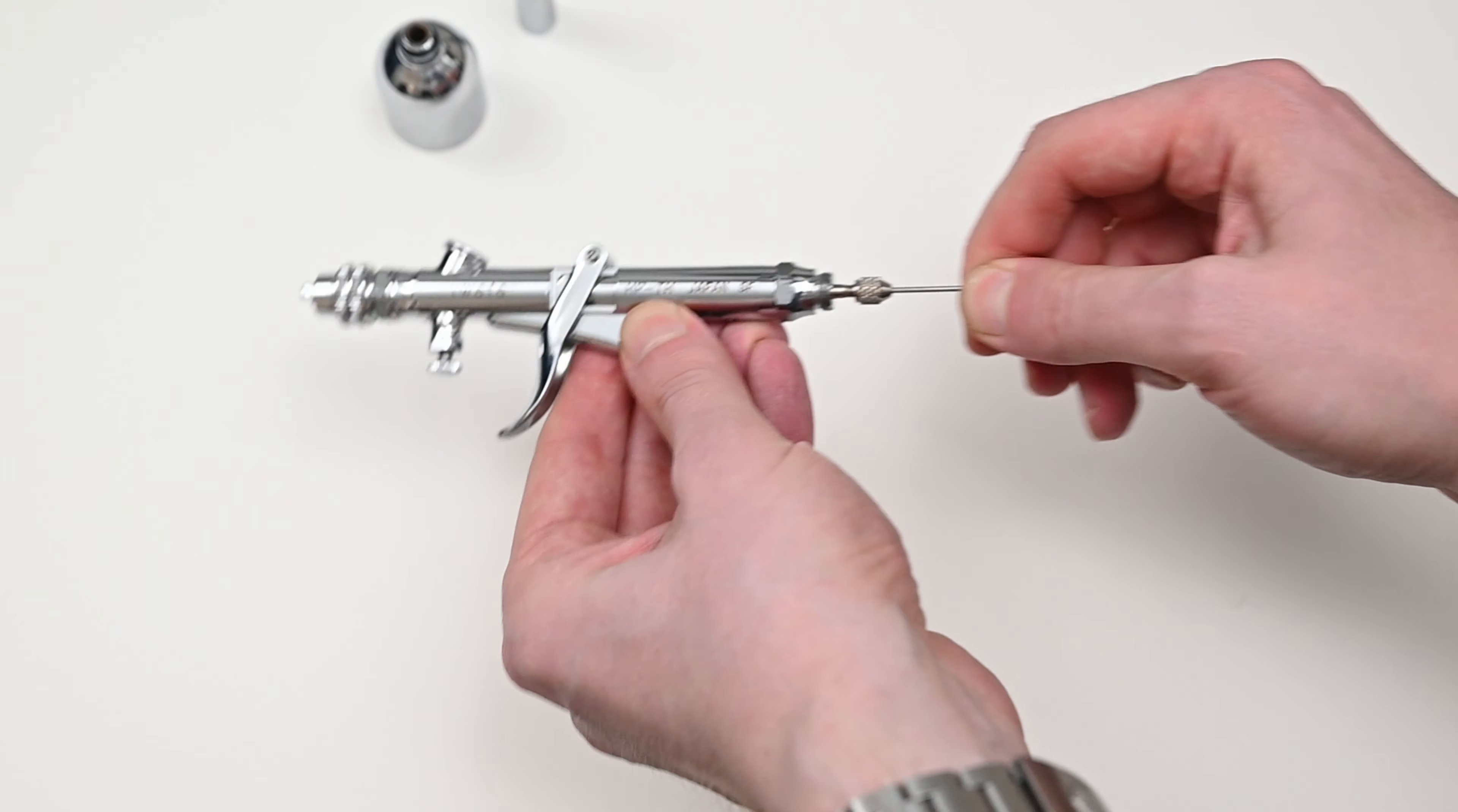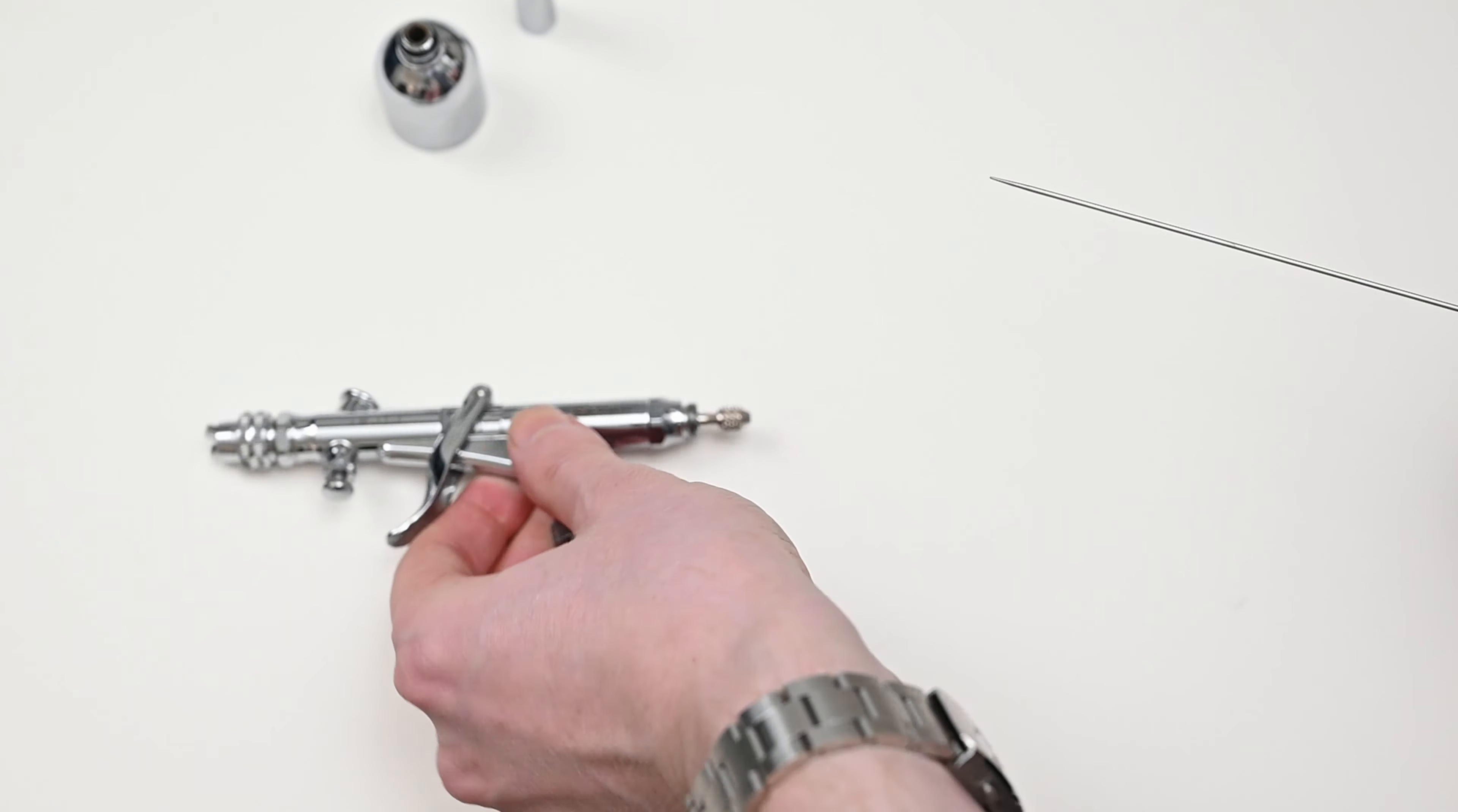Like most Iwata airbrushes this one's very easy to break down and clean. The first thing that I want to do is remove the cup and the rear handle so that I have access to the needle.